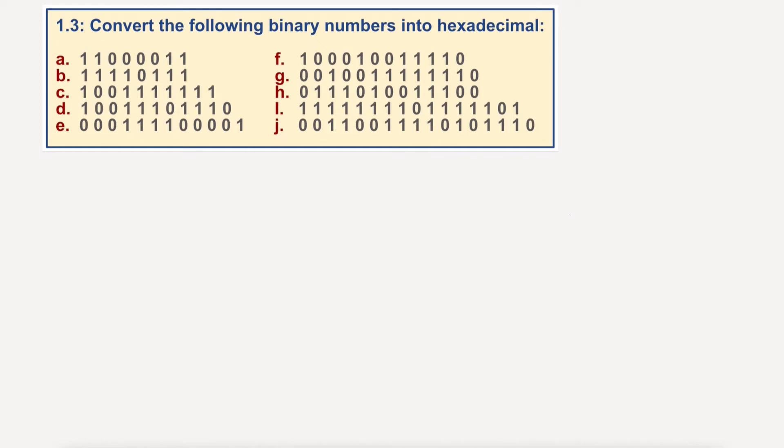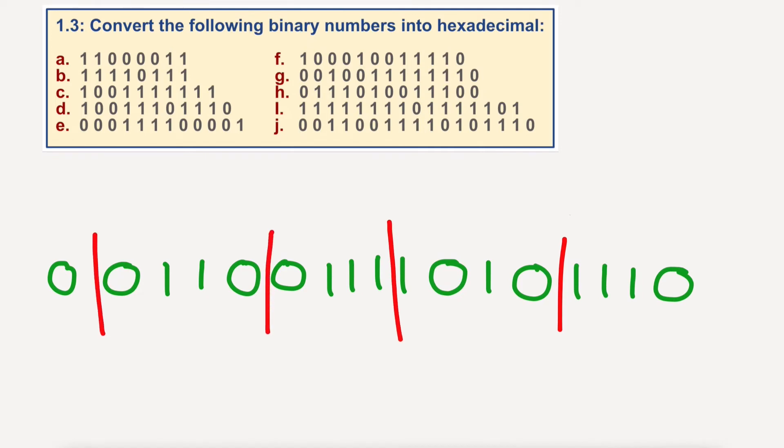Okay, so starting again. Let's use green. We've got 0, 0, it's a bit smaller. 1, 1, 0, 0, 1, 1, 1, 1, 0, 1, 1, 1, 1, 0. Okay. I'm going to split these again into nibbles. Split there. Split there. Every group of 4. Split there. Split there. We've got 0 on the end.